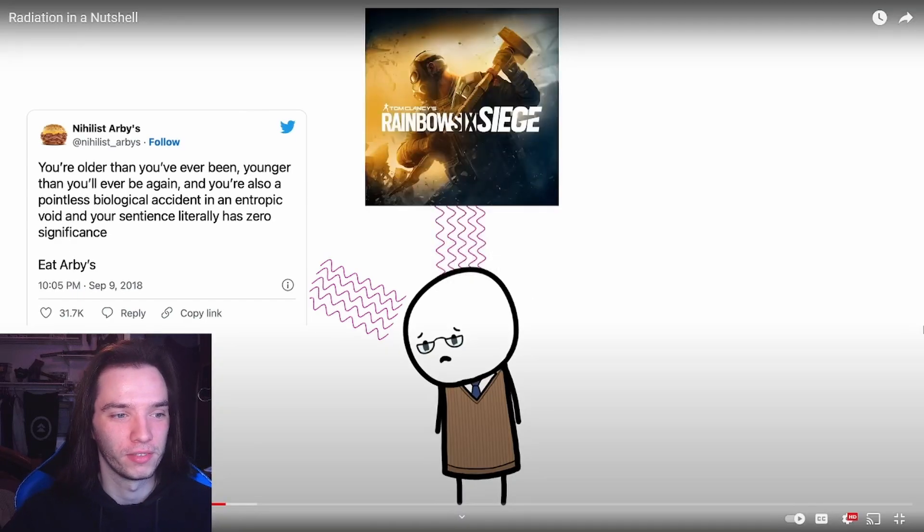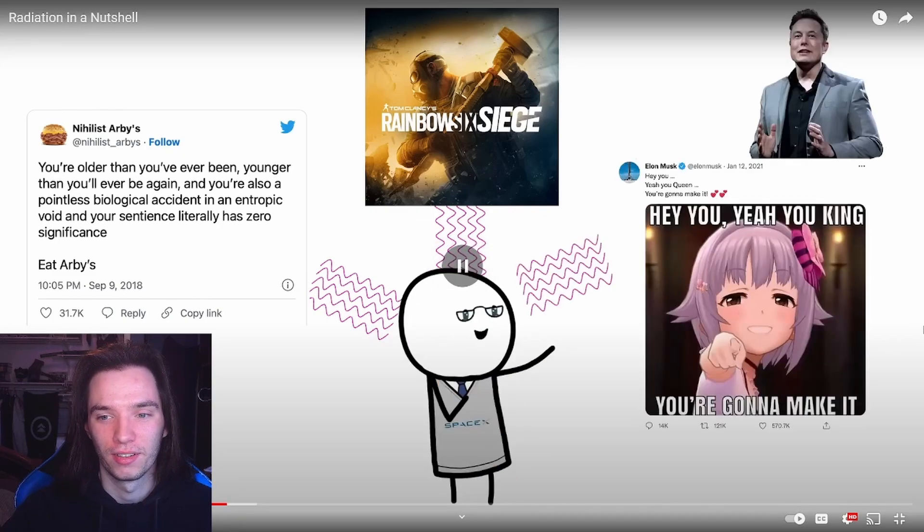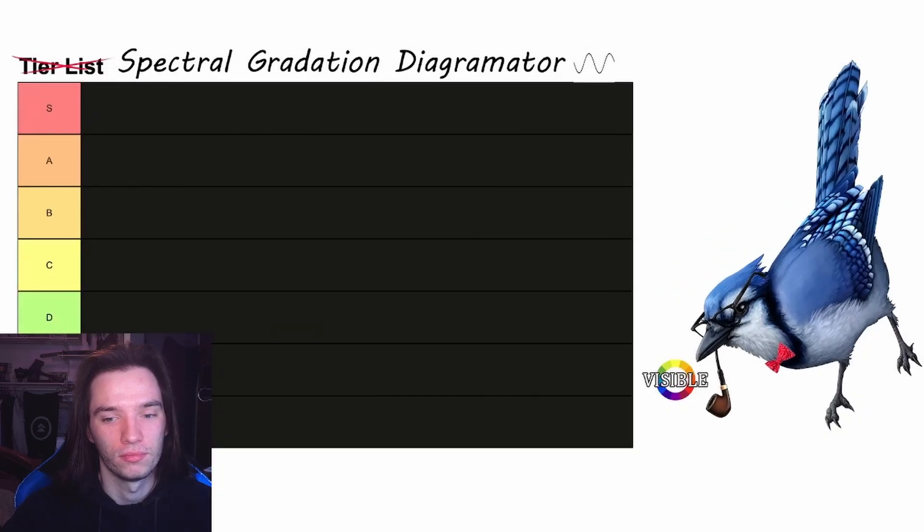Instead of delivering physical damage to the cellular makeup of your body, this type of radiation decided to spec all the way into the psychological damage skill tree. So much so that victims of visible light often experience symptoms such as nihilism, depression, or you're older than you've ever been, younger than you'll ever be again, and you're also a pointless biological accident in a tropic void, and your sentience literally has zero significance. Eat our bees. The sudden desire to worship Elon Musk.